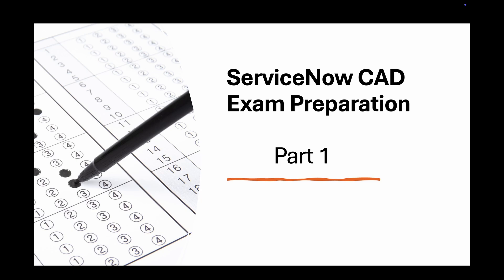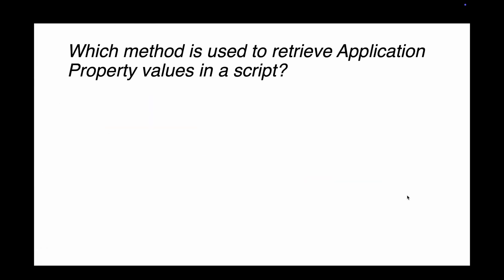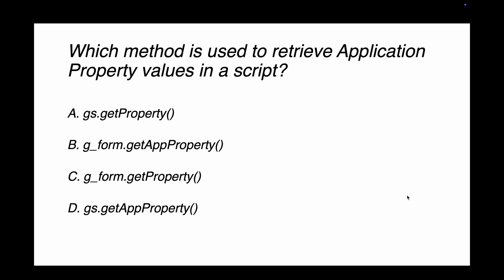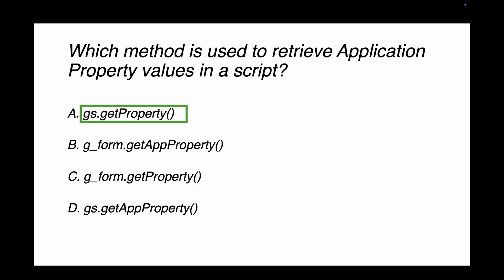Question 1: Which method is used to retrieve application property values in a script? The options are gs.getProperty, g_form.getAppProperty, g_form.getProperty, and gs.getAppProperty. The g_form options are wrong because this is a server-side method requiring 'gs'. There's no function called getAppProperty, so the right answer is gs.getProperty — which I've used many times in script includes to access values stored in the properties table.